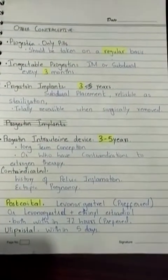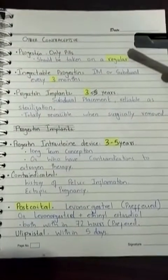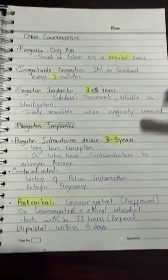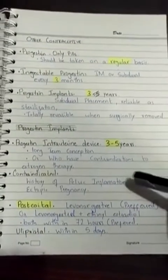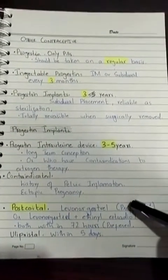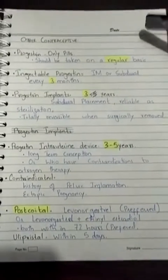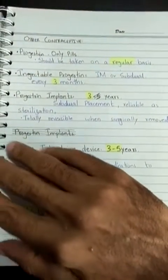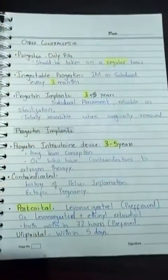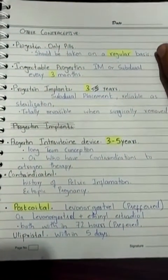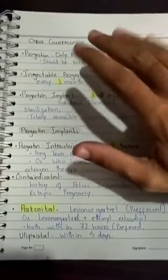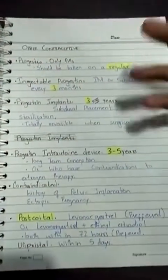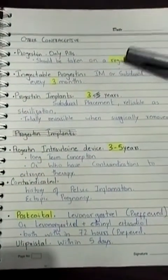Beyond the three main types, there are other contraceptives: progestin-only pills, injectable progestins, progestin implants, progestin intrauterine devices, and post-coital contraceptives. Progestin-only pills contain only progestin — no ethinyl estradiol or estrogen — as the active ingredient. They must be taken on a regular basis, and their efficacy is slightly lower than the combination types.